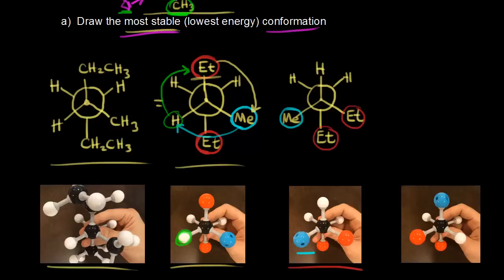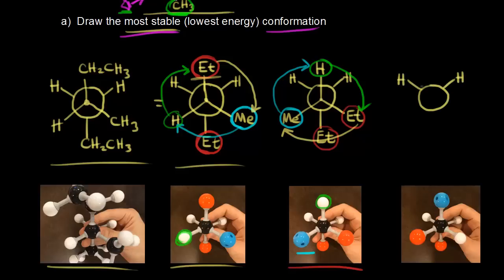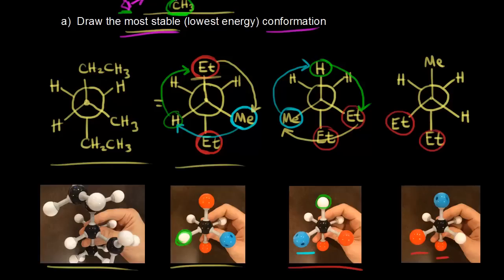The hydrogen in green is this hydrogen here. We can rotate one more time to get our last staggered conformation. The ethyl group in red rotates over, the methyl group in blue rotates, and the hydrogen in green moves to its new position. Drawing in the back carbon with the hydrogens and the ethyl group, that moves our ethyl group to this position, the methyl group in blue moves up, and the hydrogen in green moves over.